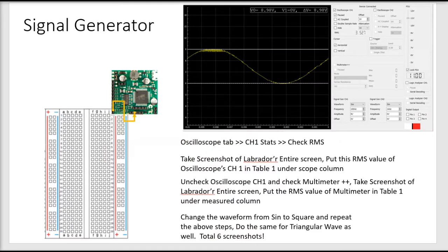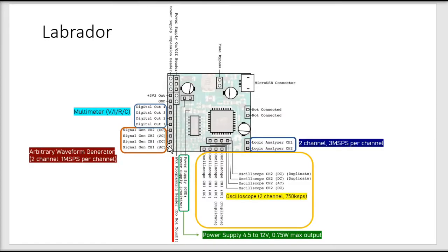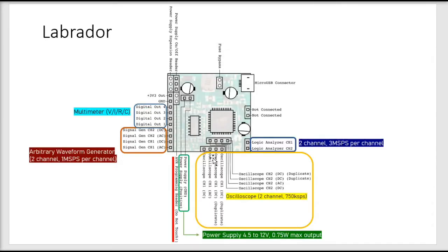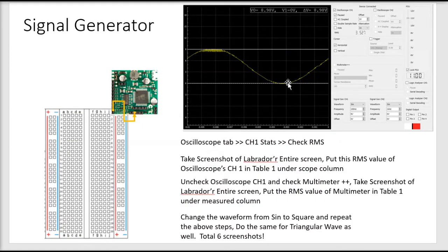Moving on to the signal generator portion: the second port from the bottom — you have to connect your oscilloscope AC channel in order to measure that wave. The oscilloscope channel 1 AC is there, so you're going to take a wire, put it in over here, and connect it to signal generator channel 1 DC. Just place the Labrador and connect to your PC.